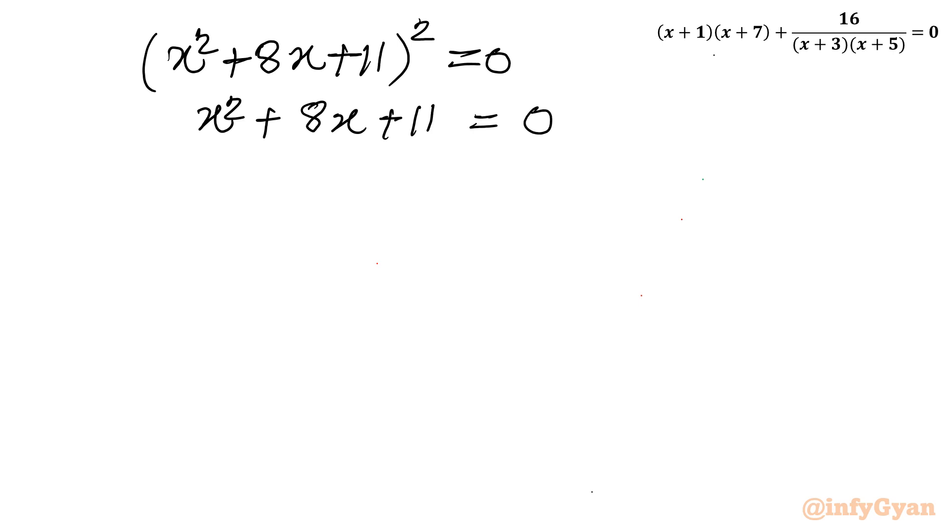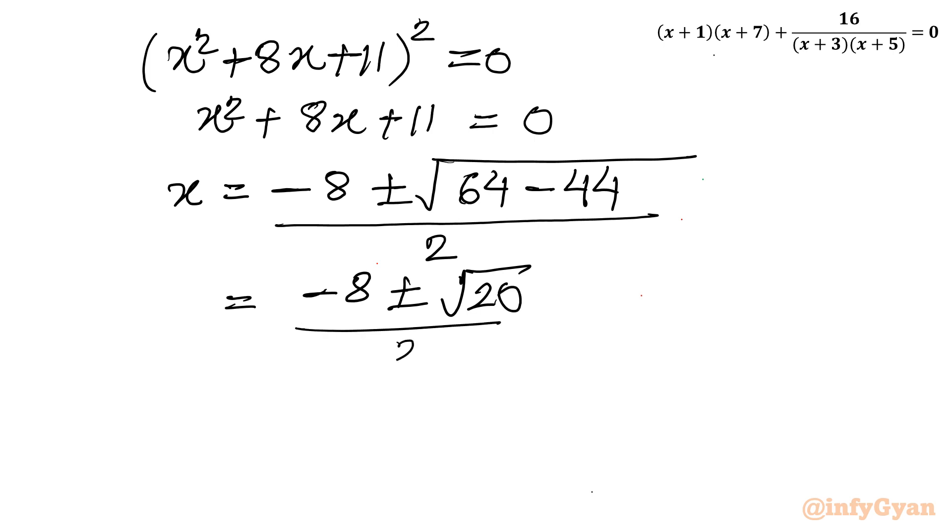This is one quadratic equation. So I will consider Sridharachar formula, minus b. So minus 8 plus minus under the root, b square minus 4ac. So 64 minus 44 divided by 2a. So 2, equal to minus 8 plus minus root 20 divided by 2. I will write root 20 as 2 root 5.